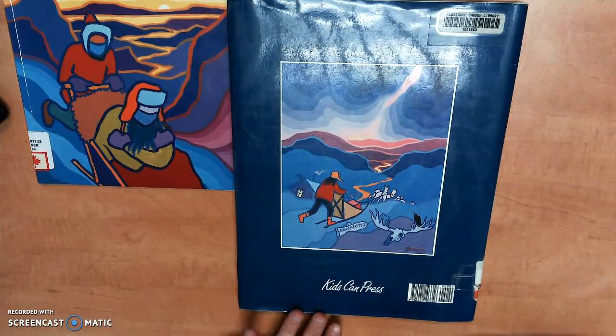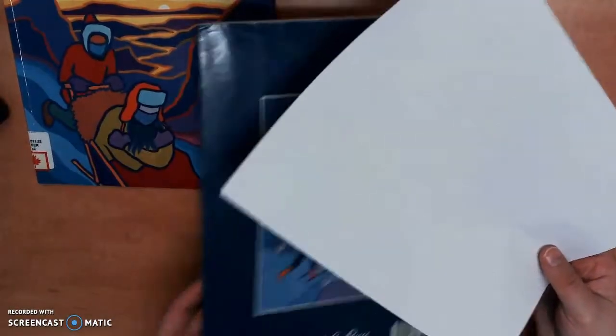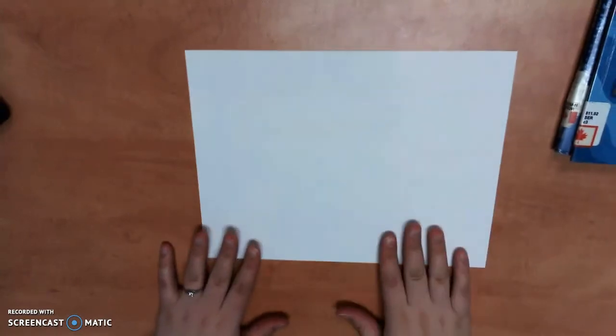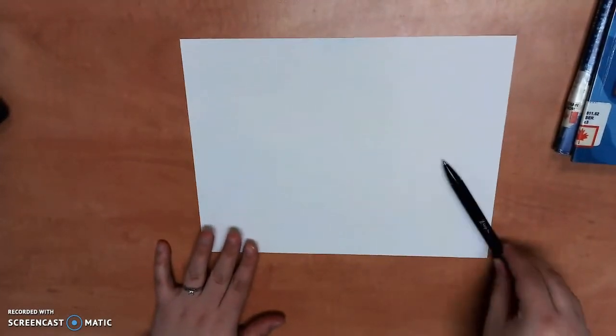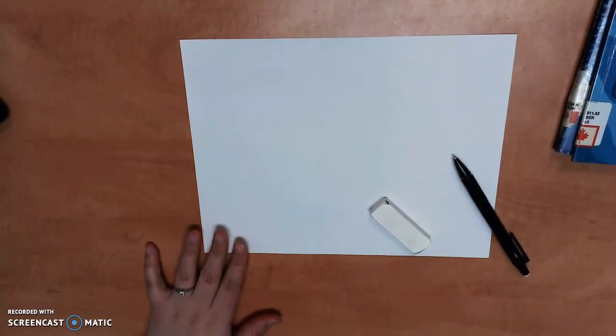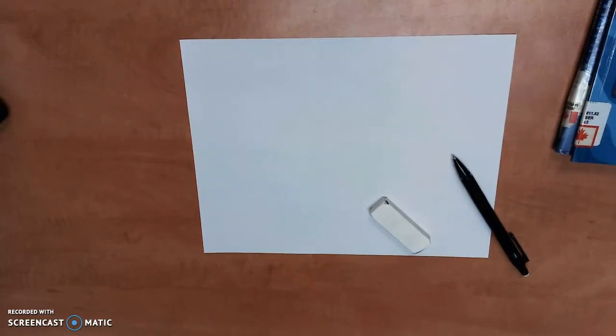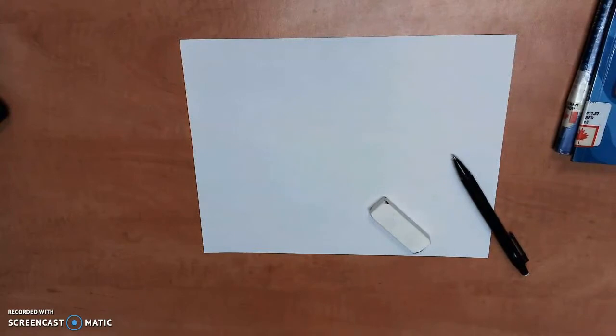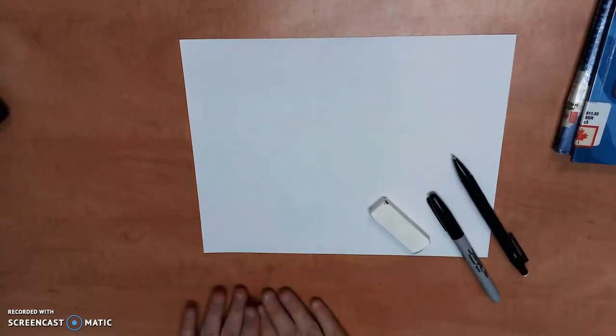All right, so we are going to get started on our art today. What you're going to need is a blank piece of paper. You'll need a pencil, an eraser, and then you'll need something to do some coloring with. Perhaps you'll use crayons or markers. If you have paint at home and you would like to paint, you could do paint. Maybe you have pastels. There's lots of different things. We want to really get those bold colors. You'll also probably need or you may want a black marker to kind of do some outlining.